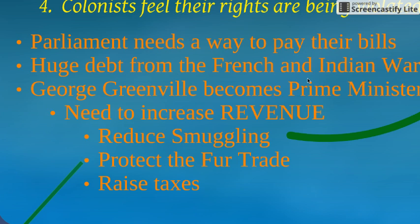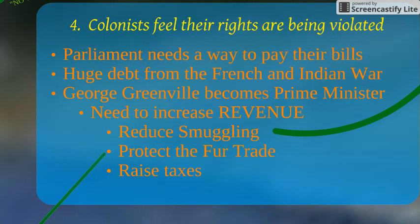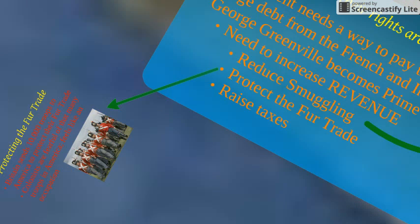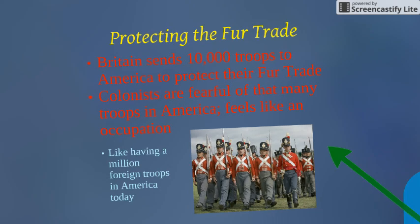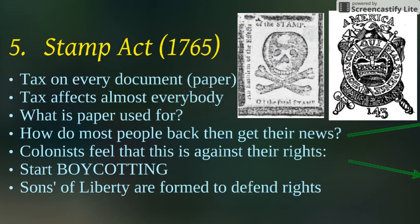The prime minister had three methods: reduce smuggling, protect the fur trade, and raise taxes — and that's what we're focusing on today. Remember, we sent extra troops to America, and those people cost money. The first major tax we're going to see is the Stamp Act, and this is a fundamental, huge moment in American history — the first tax Parliament ever put directly onto the people.